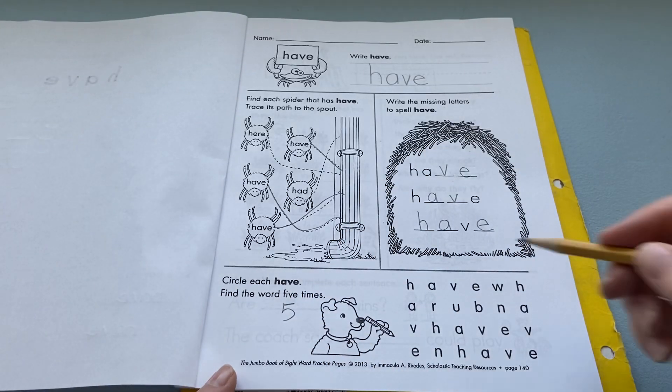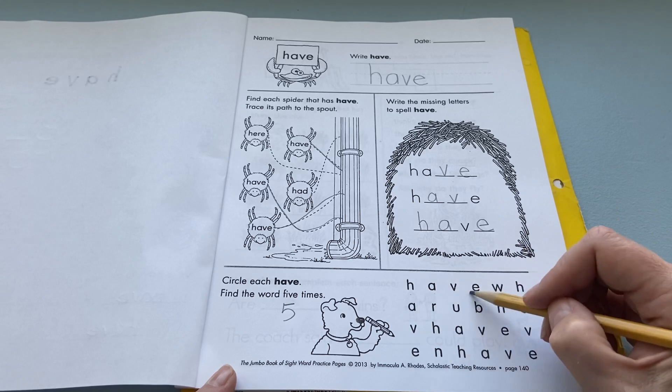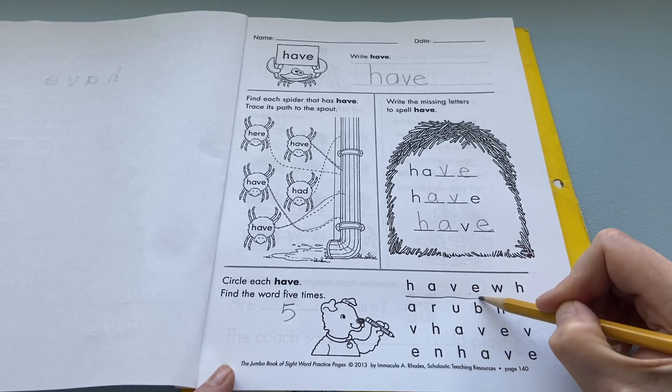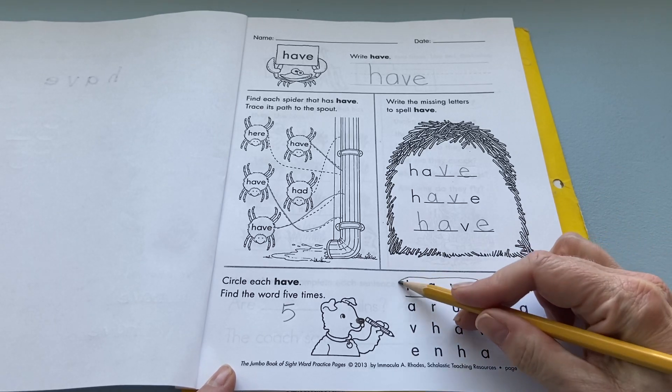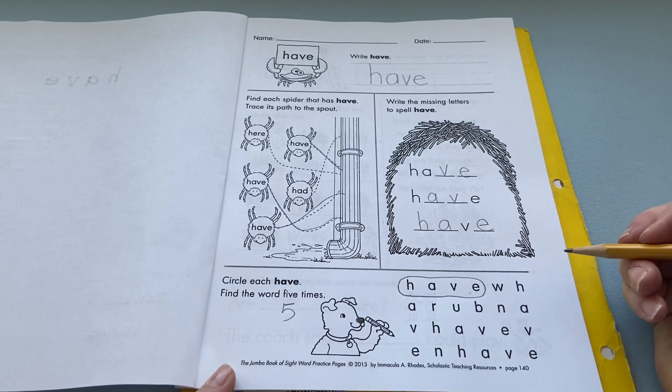You're going to find the word 'have' five times. So here H-A-V-E, so I'm going to underline the letters and come around and close it.